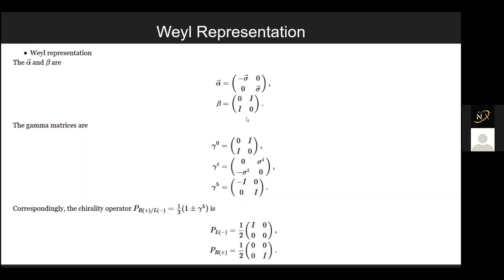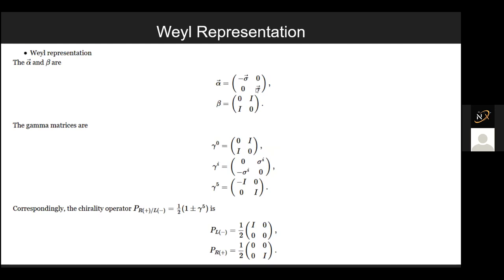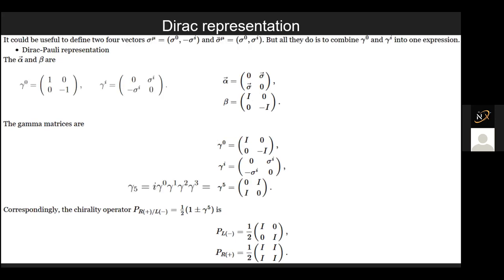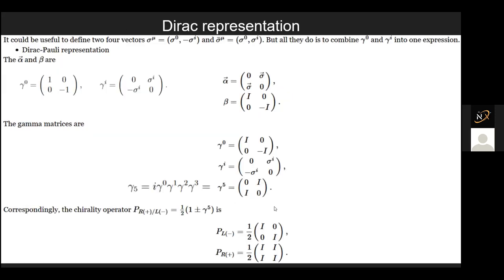The second one is the Weyl representation. The gamma ideas remain the same, but there's a slight difference in the alpha — the first and second elements are swapped. In general, you can have gamma matrices as any random matrices as long as they're anti-commutative. They have to follow this property, which is why you can have multiple representations in the first place.